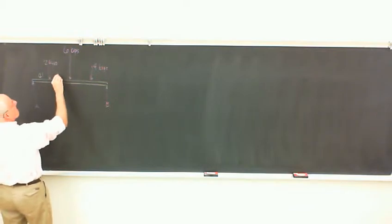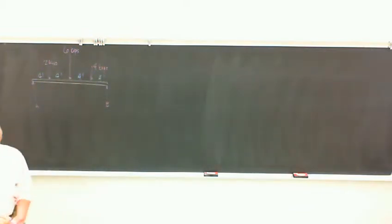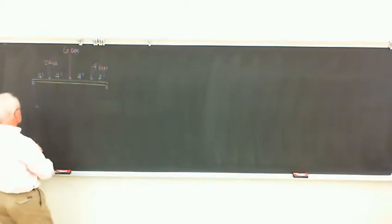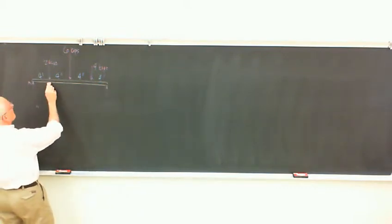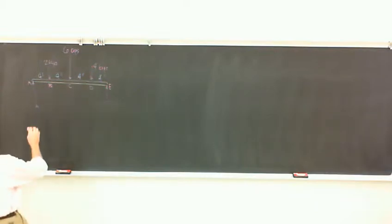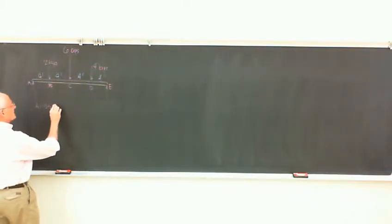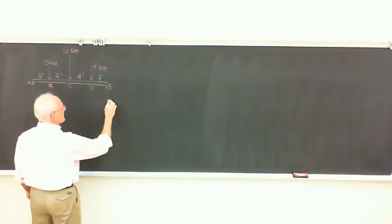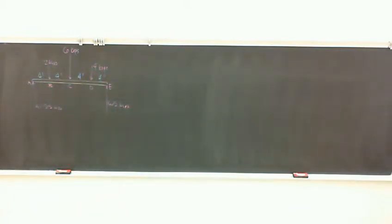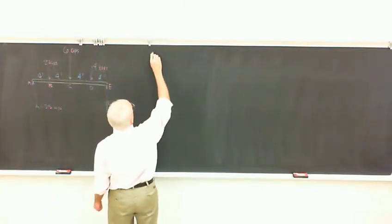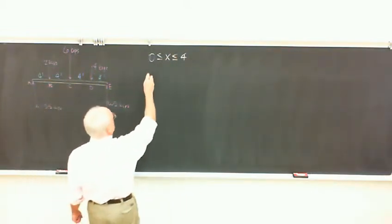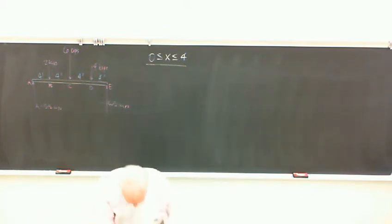We've just gotten through going through all the parts, finding the moment and the shear for each section. We labeled these points just for reference. We had those reactions - I think this was 5.5 and this one was 6.5. Then we looked at the shear and the moment in a bunch of different sections and found it to be a little bit different in each one.